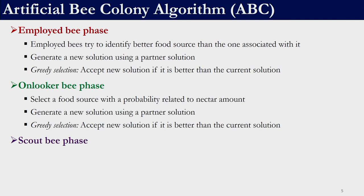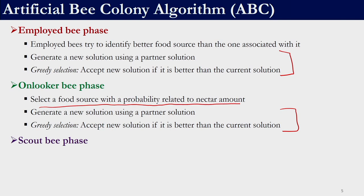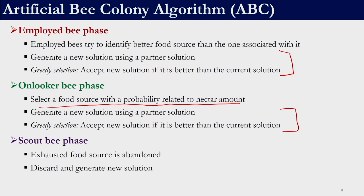In the employed bee phase, employed bees try to identify a better food source than the one they are currently associated with. In optimization terms, we generate a new solution using a partner solution and perform a greedy selection — accepting the new solution only if it is better than the current solution. In the onlooker bee phase, we similarly generate a new solution and perform a greedy search, but we select a food source based on a probability related to the nectar amount rather than using every food source. In the scout bee phase, the exhausted food source is abandoned and a new solution is generated to replace it.